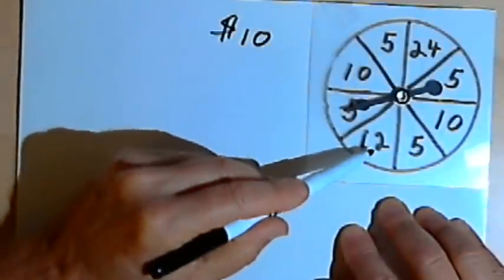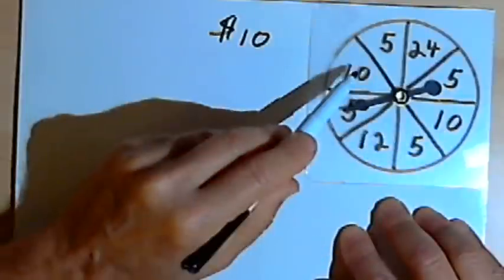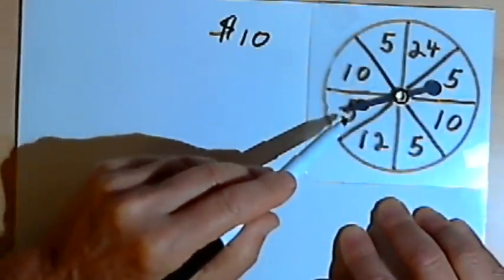If you land in one of the sections, you're going to get 24 dollars back. If you land in another section, you'll get 12 dollars back. There are two sections that will give you 10 dollars back, and the other four sections have a payback of five dollars.